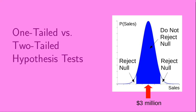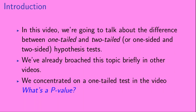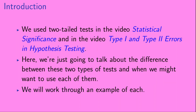Welcome to one-tailed versus two-tailed hypothesis tests. In this video, we're going to talk about the difference between one-tailed and two-tailed, or one-sided and two-sided, hypothesis tests. We've already broached this topic briefly in other videos. We concentrated on a one-tailed test in the video 'What's a p-value?' and used two-tailed tests in 'Statistical Significance' and 'Type 1 and Type 2 Errors in Hypothesis Testing.' Here, we'll talk about the difference between these two types of tests and when we might want to use each of them. We will work through an example of each.